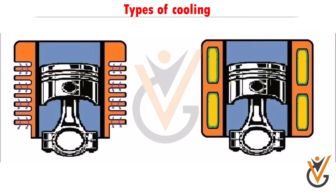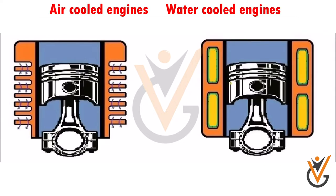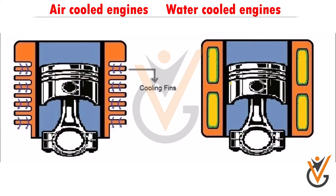On the basis of types of cooling, engines are classified as air-cooled engines and water-cooled engines. In air-cooled engines, air is used to cool the engine. The cylinder barrels are separated and metal fins are used, which provide radiating surface area that increases cooling. Air-cooled engines are generally used in motorcycles and scooters.